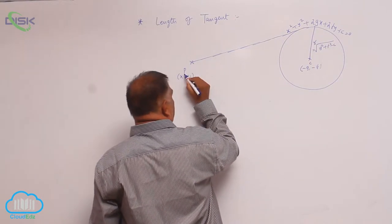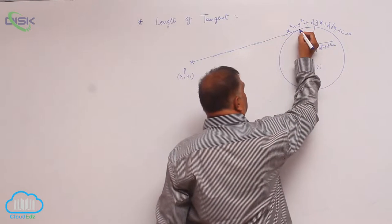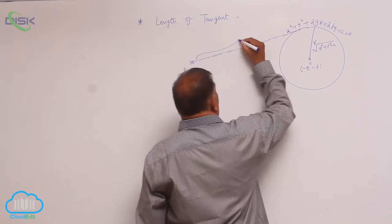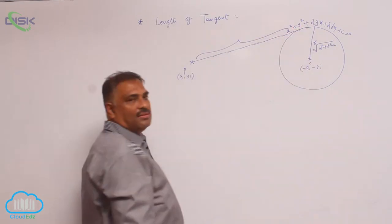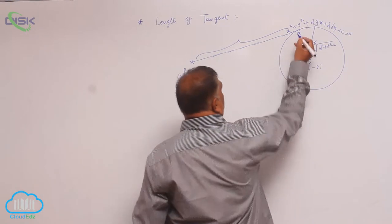The distance between the point P and where the point touches the circle, this is called length of tangent. Let us say this is point Q.